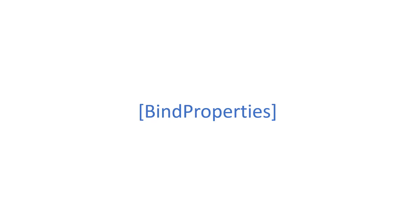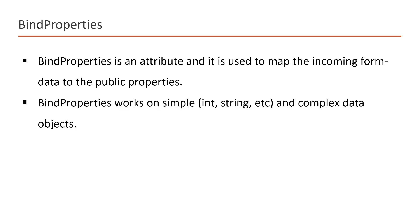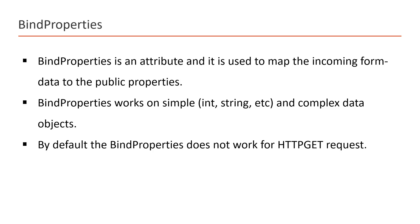The second attribute is BindProperties. BindProperties is also an attribute used to map the incoming form data to the public properties of the controller. The binding concept of the BindProperty attribute and the BindProperties attribute is the same. BindProperties works on simple and complex objects. By default, BindProperties does not work for HTTP GET requests.